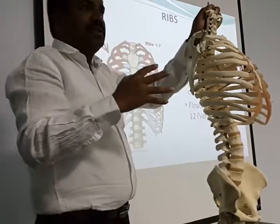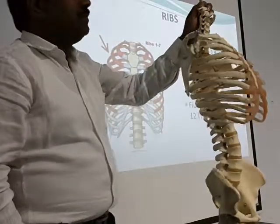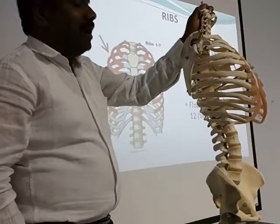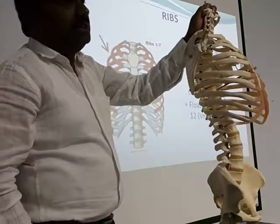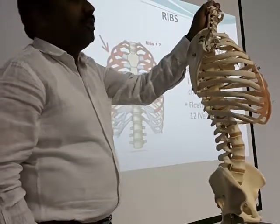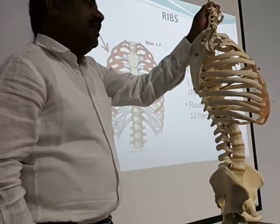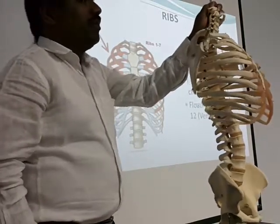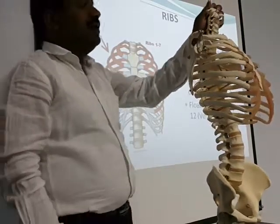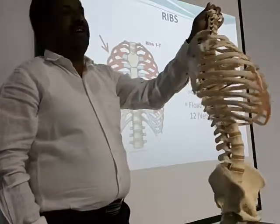To summarize rib classification: ribs one to seven are vertebrosternal or true ribs. Ribs eight to twelve are collectively called false ribs. Of these, eight, nine, and ten are vertebrochondral, while eleven and twelve are floating or free ribs because they have no anterior attachment.